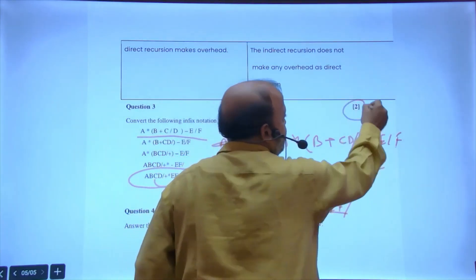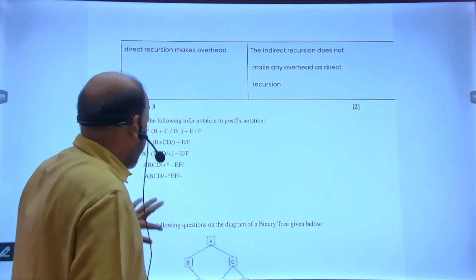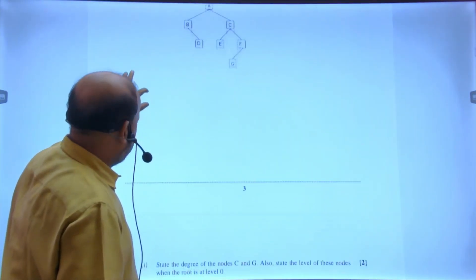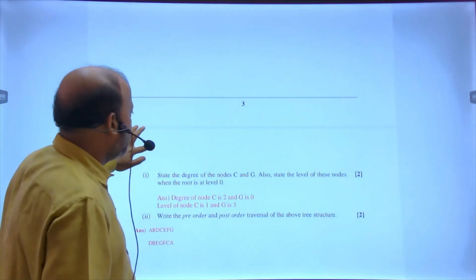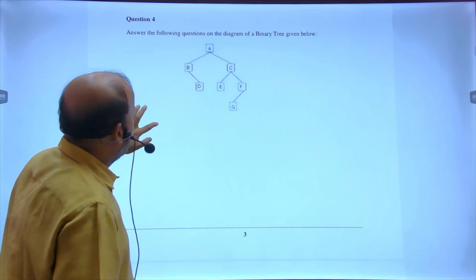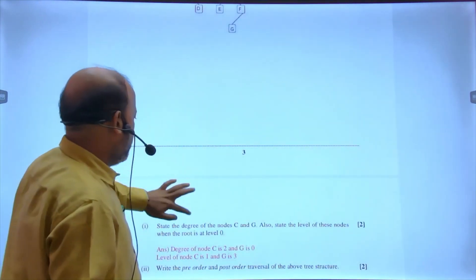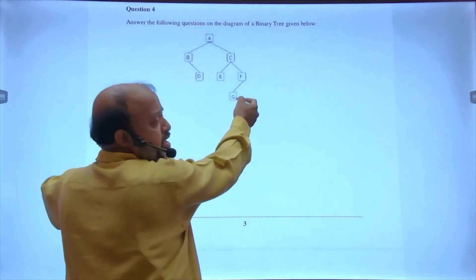See the marks. Answer the following, again easy scoring. You can see this tree: degree of node C is two. C has two children, therefore two. And G is zero, G is bachelor, that is leaf, therefore zero.